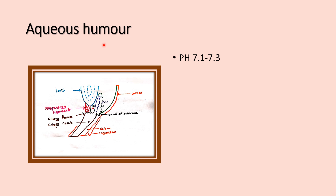Aqueous humor is a thin watery fluid. The pH of the aqueous humor is slightly acidic, 7.1 to 7.3. The specific gravity is 1.002 to 1.004.